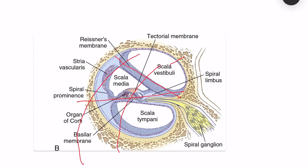The top compartment is scala vestibuli, the bottom one is scala tympani, and in between there is scala media. You can see these components — the organ of Corti is present in the scala media.